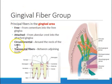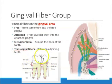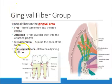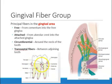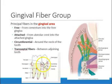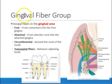We also have circumferential fibers, which loop around the tooth. Then there are transeptal fibers, which are gingival fibers attached from one gum to the other gum between two adjoining teeth. They are confined within the gingival area, which is why they are classified as part of the gingival fiber group.